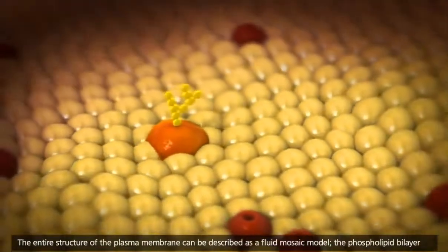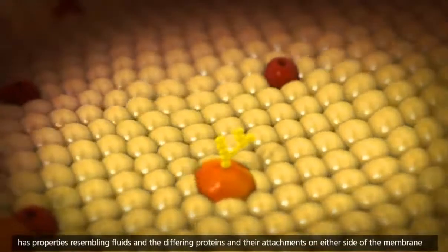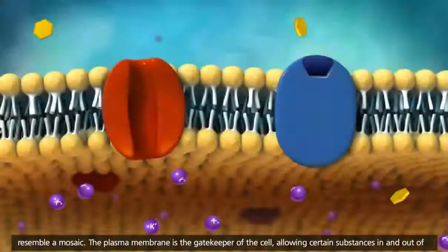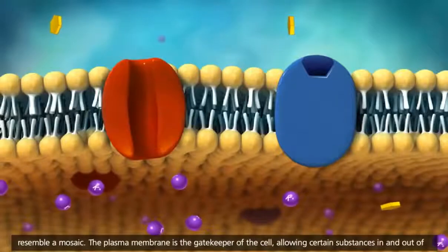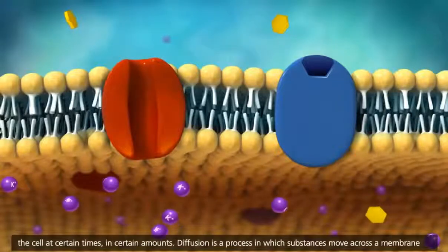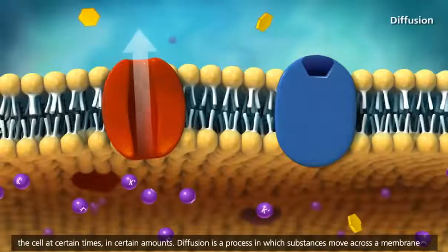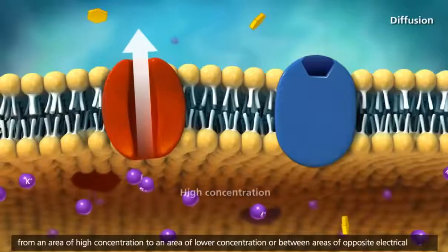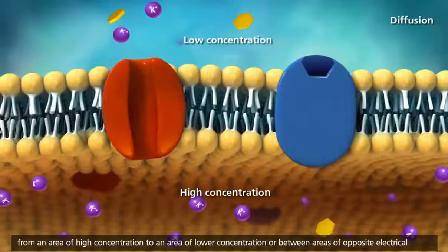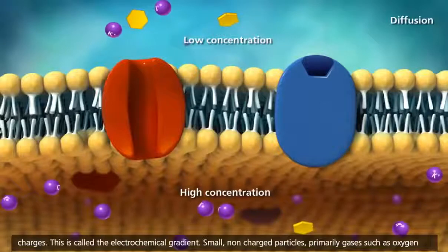The phospholipid bilayer has properties resembling fluids, and the differing proteins and their attachments on either side of the membrane resemble a mosaic. The plasma membrane is the gatekeeper of the cell, allowing certain substances in and out of the cell at certain times in certain amounts. Diffusion is a process in which substances move across a membrane from an area of high concentration to an area of lower concentration, or between areas of opposite electrical charges. This is called the electrochemical gradient.